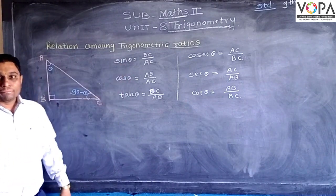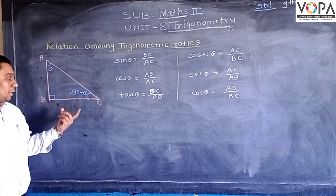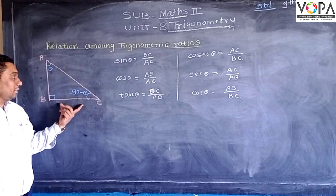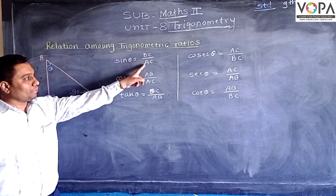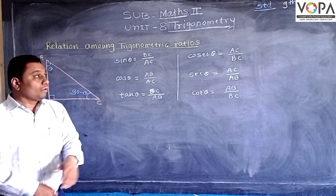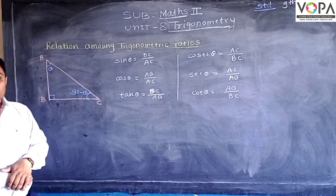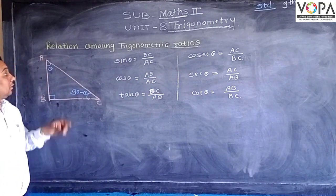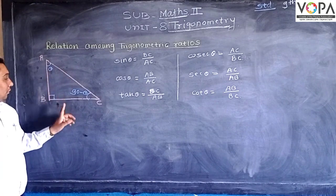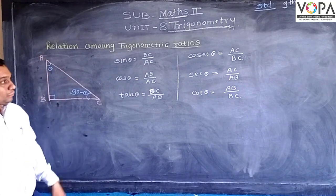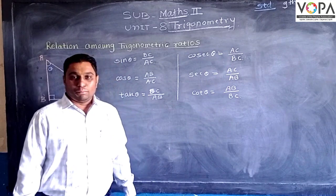Now look at the ratio sine theta. What is sine theta? Sine theta is the opposite side upon hypotenuse, that is BC upon AC. Now what is cosine theta? Cosine theta is hypotenuse upon opposite side, so AC upon BC.